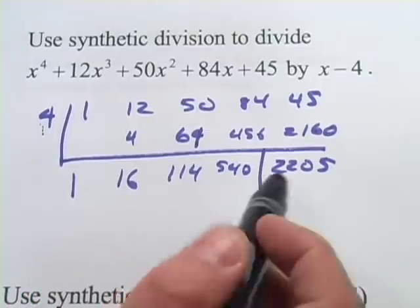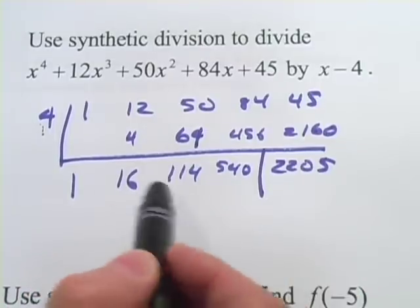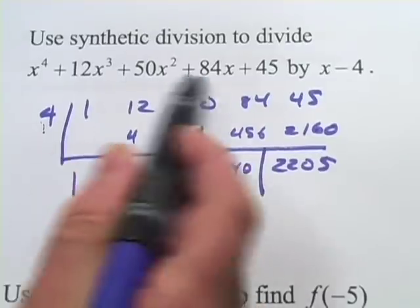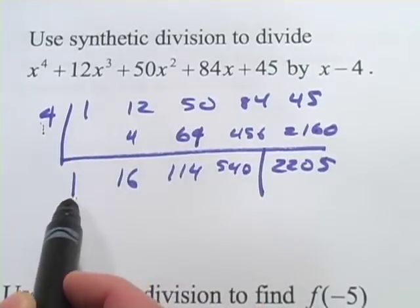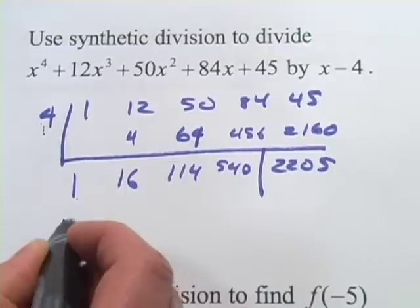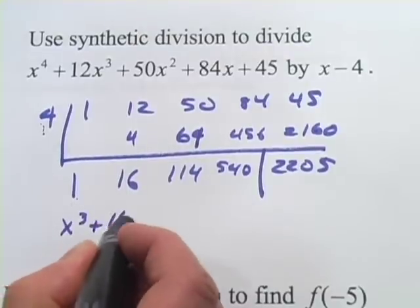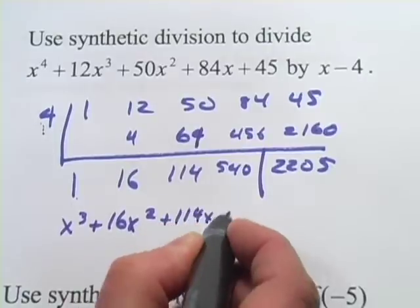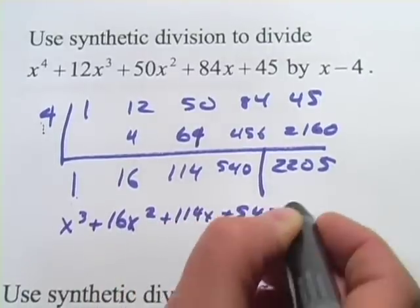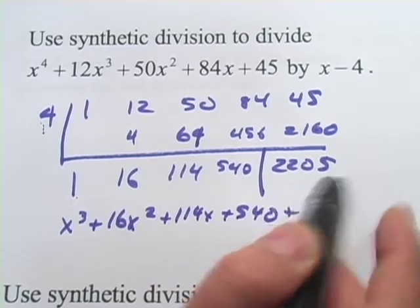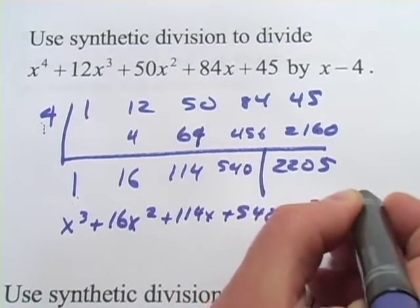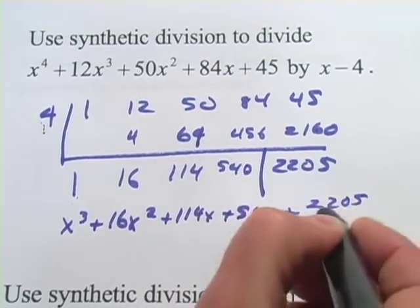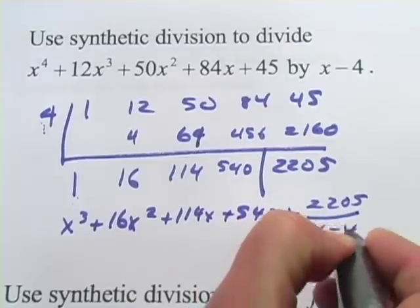So that's our remainder. Now if you want to give the answer back, we've got to just translate this back into an algebraic expression. This is our cubic term here, so this would be x cubed plus 16x squared plus 114x plus 540 plus, and then our remainder is the number 2205 over the factor, x minus 4.